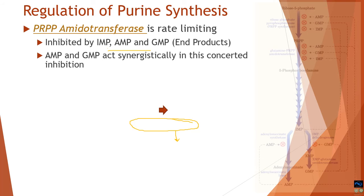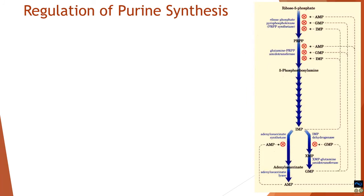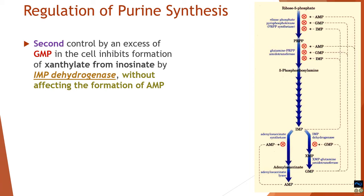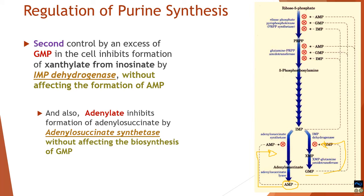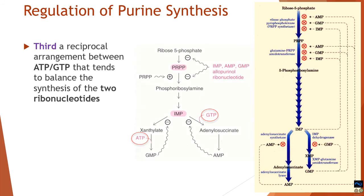The second important control mechanism is by end products AMP and GMP. When GMP is in excess, it inhibits its own formation by feedback, blocking the dehydrogenase enzyme so that IMP is not converted to XMP or GMP. Similarly, when AMP is in excess, it causes feedback regulation of adenylosuccinate synthetase, preventing the conversion of IMP to adenylosuccinate and thereby preventing further AMP synthesis.